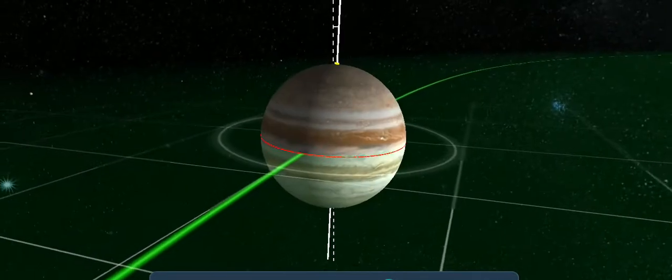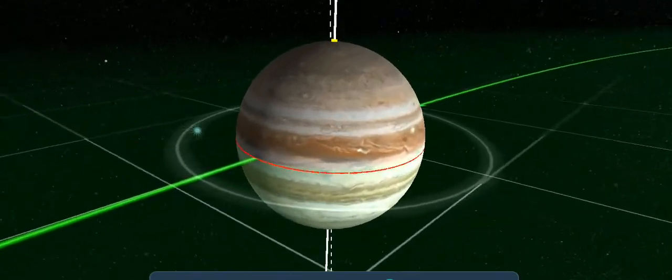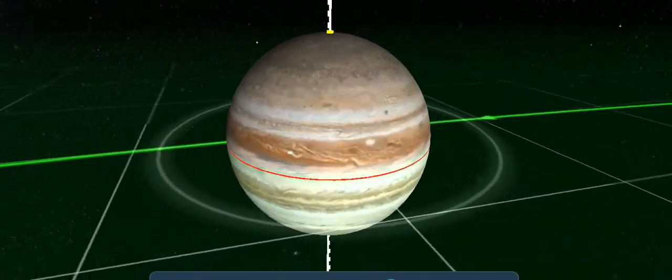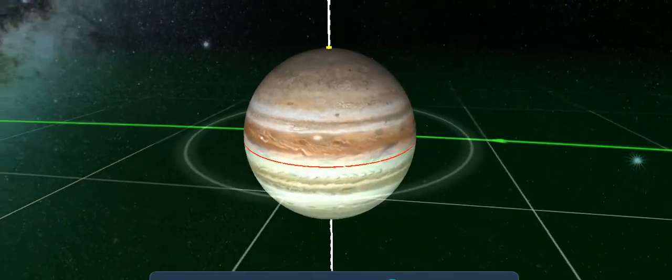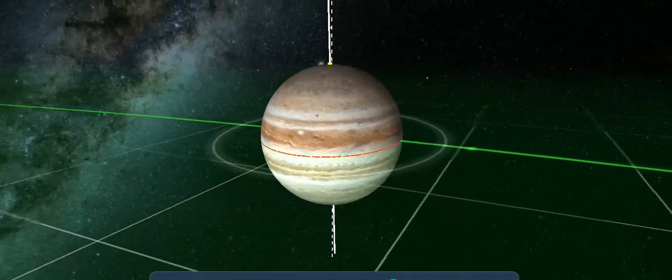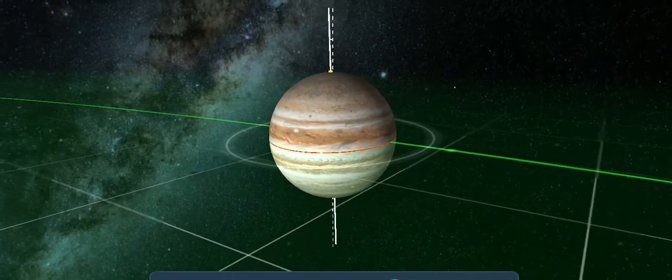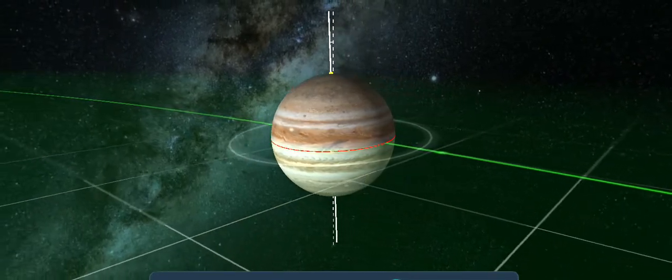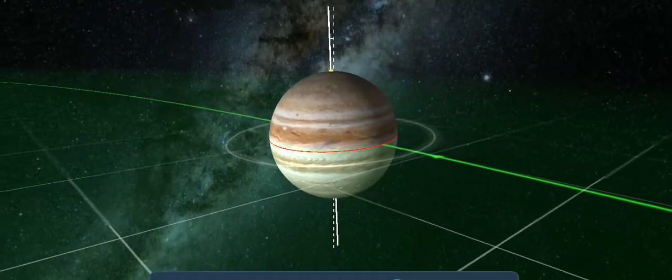Out of all the planets, the rotation of Jupiter is the fastest. It has a powerful magnetosphere, 10 times as strong as the Earth's. The magnetic axis of Jupiter is tilted 10 degrees from the axis of rotation.